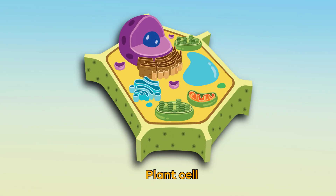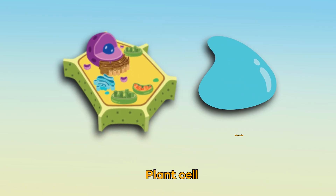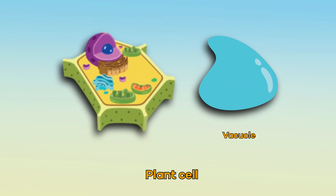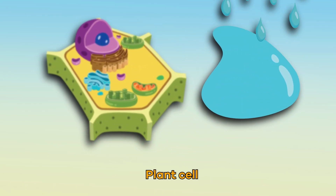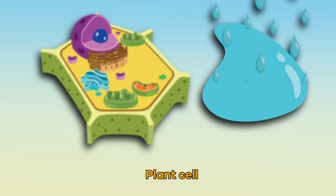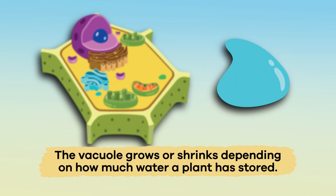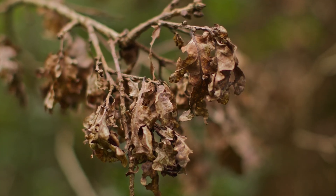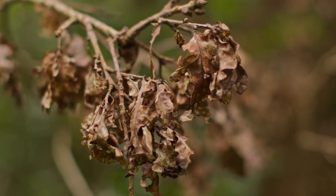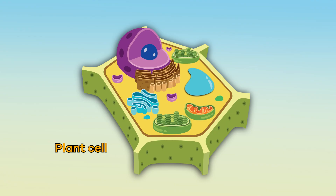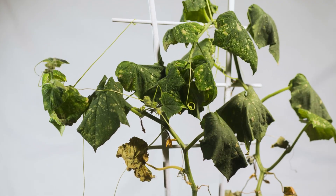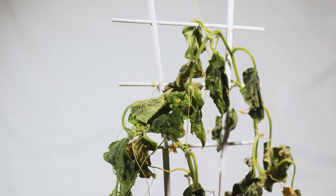Plant cells only have one large vacuole. It stores water and sap inside, and will grow or shrink depending on how much water a plant has stored. Here is an interesting fact: when a plant lacks water, its vacuole will shrink, which causes the plant to droop.